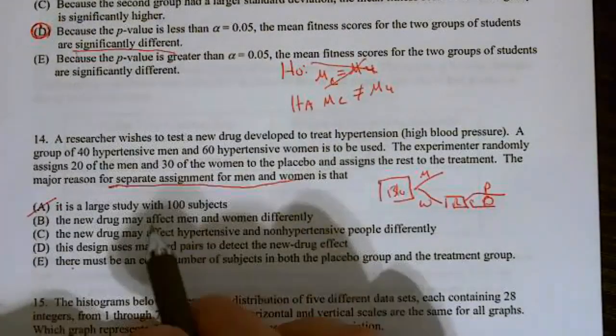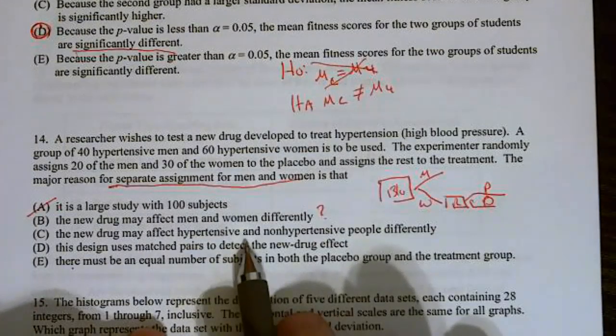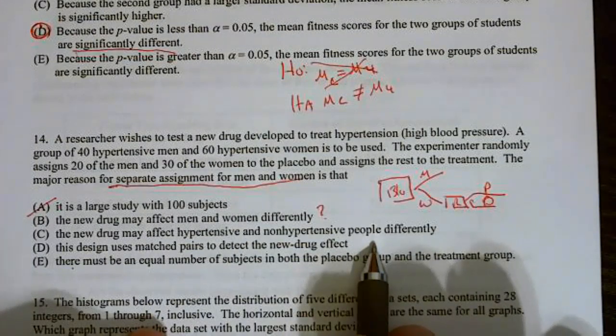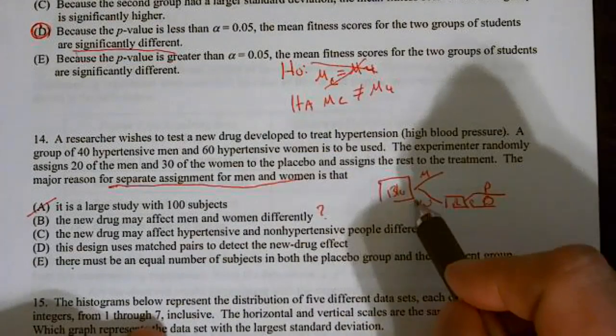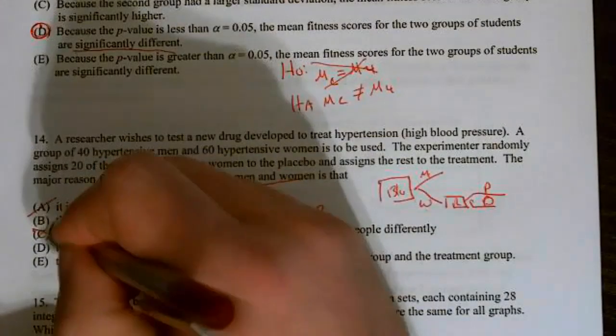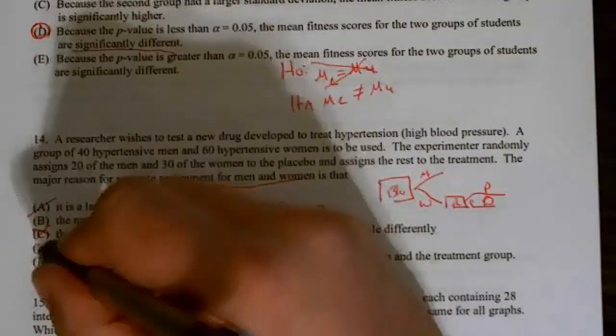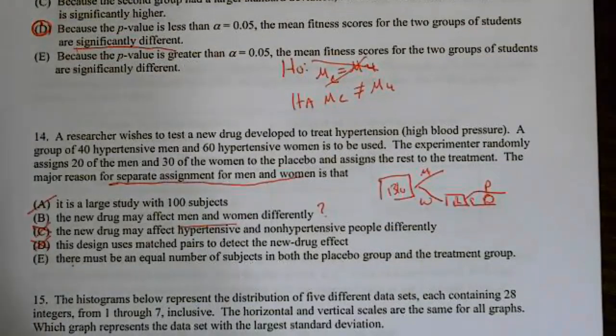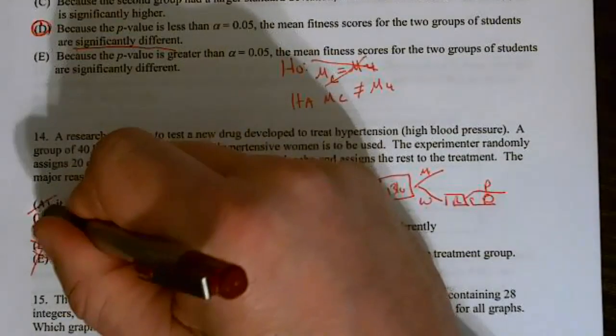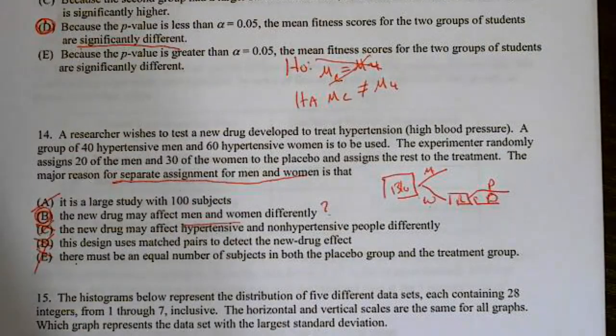The new drug may affect men and women differently. That looks pretty good to me. I like that. The new drug may affect hypertensive and non-hypertensive people differently. We did not break them down that way. We broke them down into all hypertensive and we broke it by men and women. So we blocked on men and women. That one is wrong because we did not block it by hypertensive in mind. It's not a matched pairs design because we didn't test each person twice. There's no natural pairing. The only thing it could be is that we blocked on men and women because we think a drug may impact them differently. So the answer to number 14 is B.